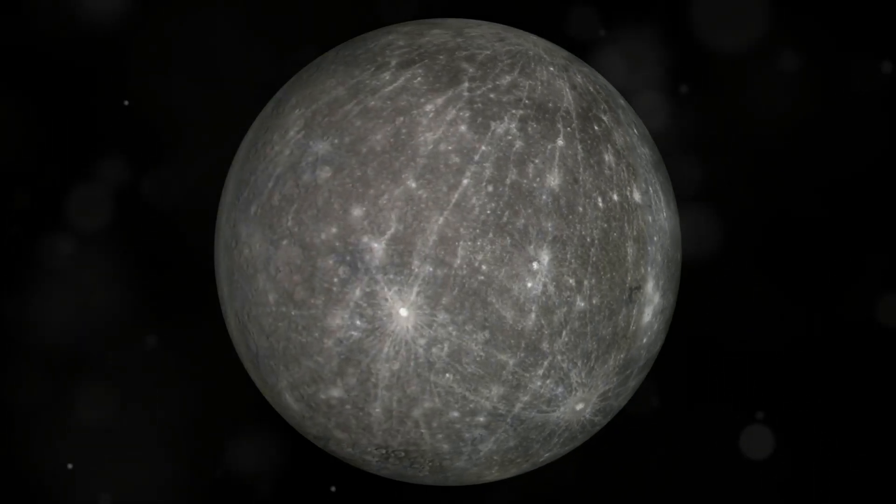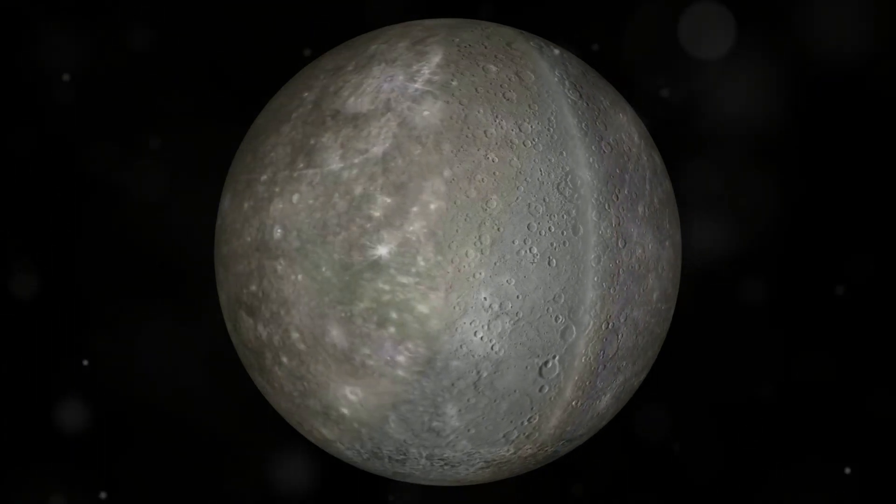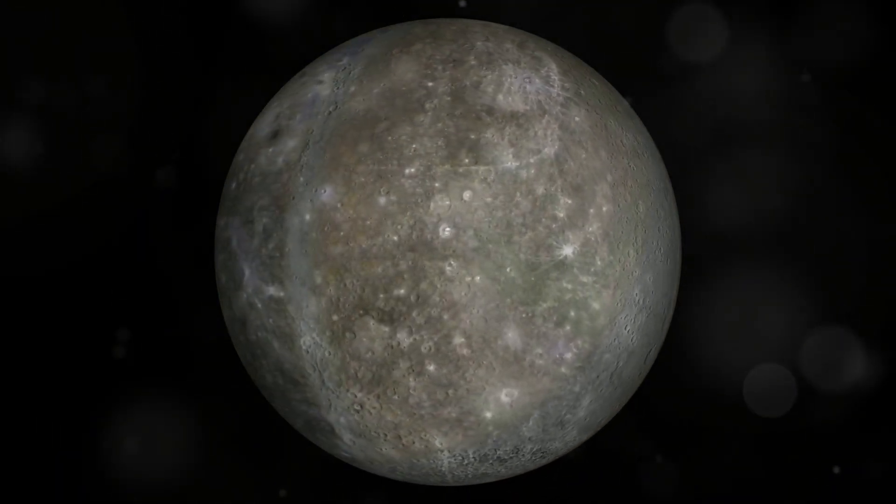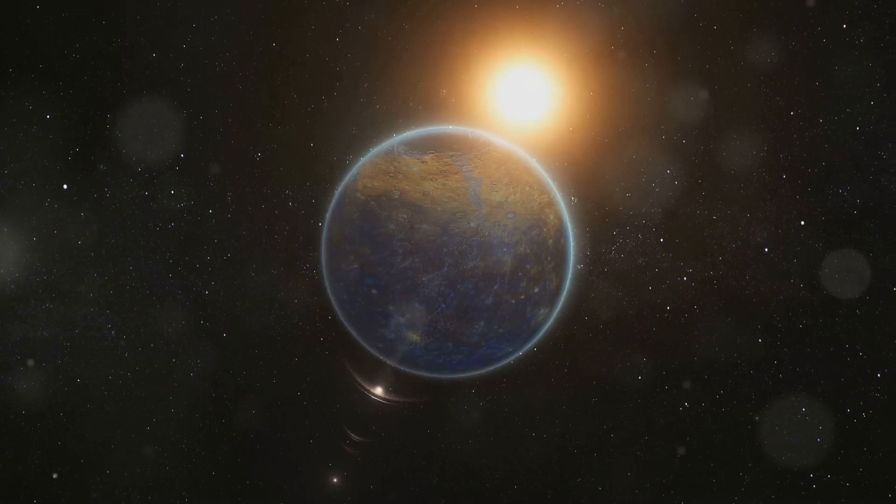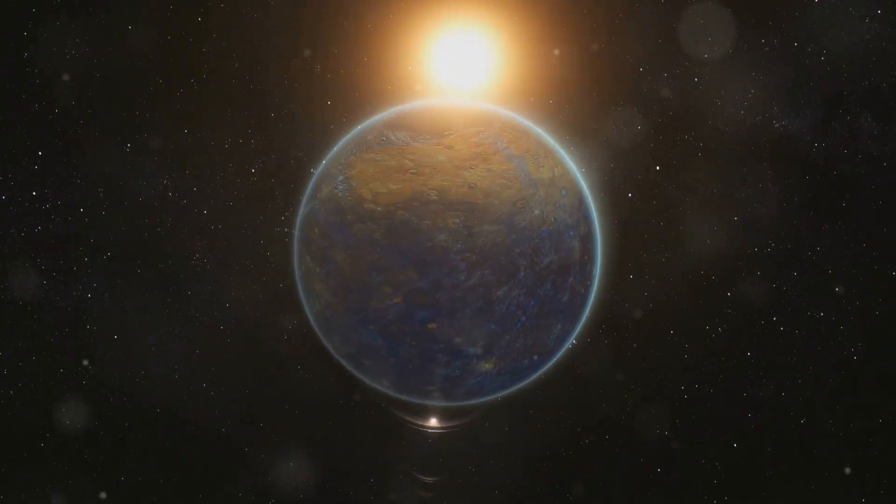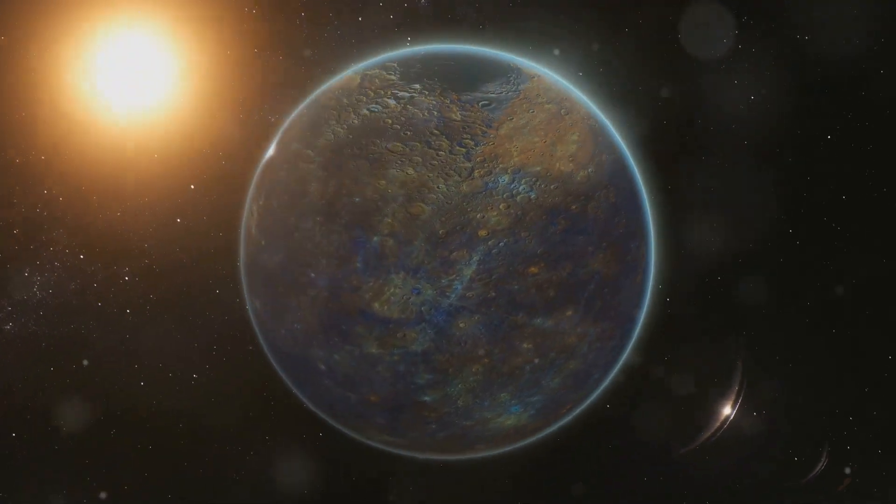Mercury: This tiny planet is the closest to the sun. It's a rocky world with extreme temperatures, scorching hot during the day and freezing cold at night. It's also the fastest planet, zipping around the sun like a race car. It completes one orbit in just 88 Earth days.